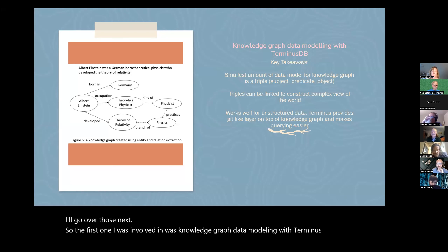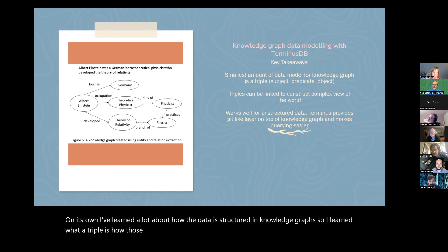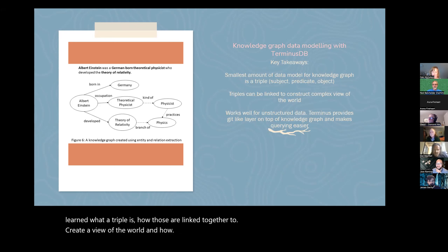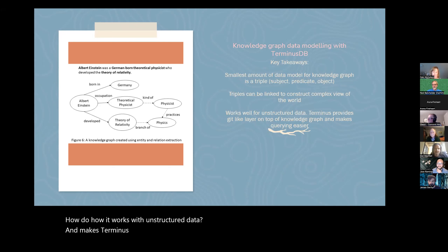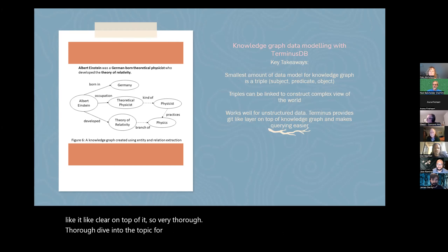The first tutorial I attended was knowledge graph data modeling with TerminusDB — a completely new topic for me. I learned a lot about how data is structured in a knowledge graph, what a triple is, how triples are linked together to create a view of the world, and how it works with unstructured data. TerminusDB makes life easier for things like querying — it's similar to MongoDB but provides a layer on top of it. It was a thorough dive into the topic for my first time — a really well done tutorial.